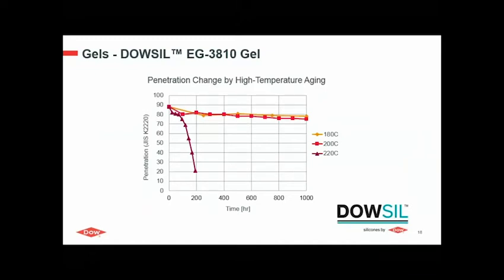We have included a graph here that demonstrates thermal stability at 200°C. You can see the penetration level — or hardness — of the gel over 1,000 hours remains absolutely stable. But you can also see the limitation: when you expose this material to 220°C, penetration goes down. So the real limit for the lifetime of the module is 200°C.